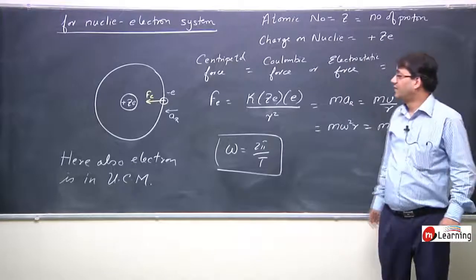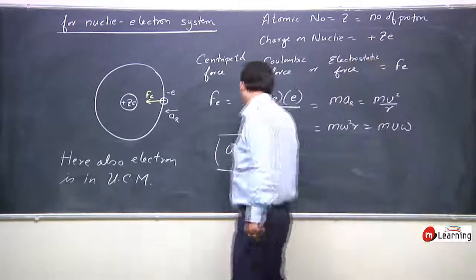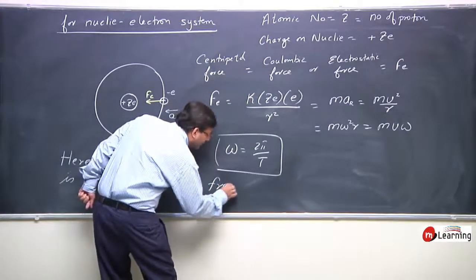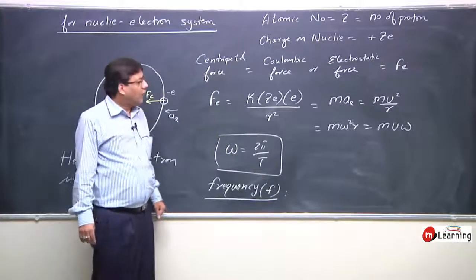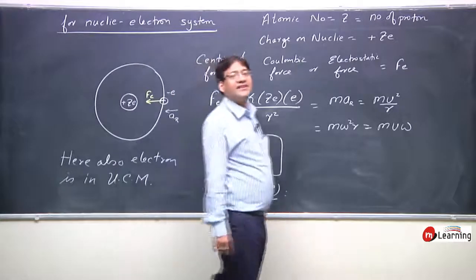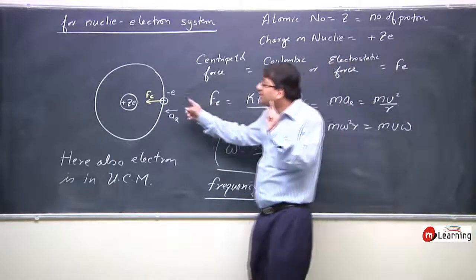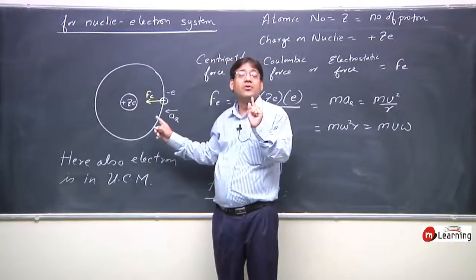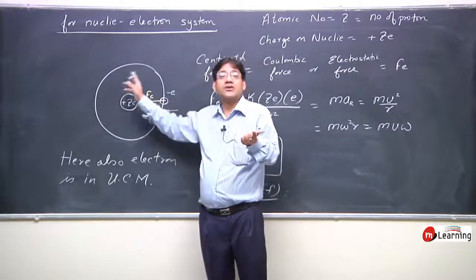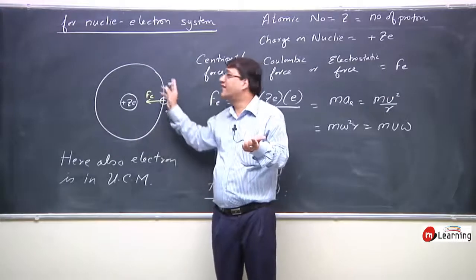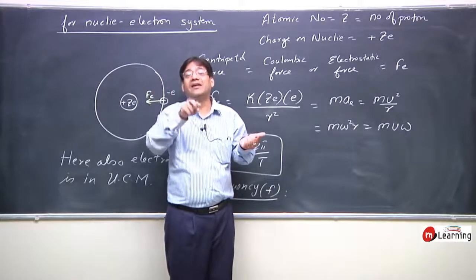Now, in uniform circular motion we also introduce a term called frequency, denoted by f. Frequency is defined as the number of circular motions or the number of turns that the particle would finish in one second. That is termed as its frequency.